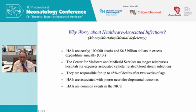Why do we worry about healthcare-associated infections? I say it's the three M's: money, mortality, and mental deficiency. These numbers are a little old, but in the US as of about eight or nine years ago there were more than a hundred thousand deaths secondary to healthcare-associated infections in both adults and children, and the estimate back then was six and a half billion dollars — I would bet it's closer to a trillion dollars now.